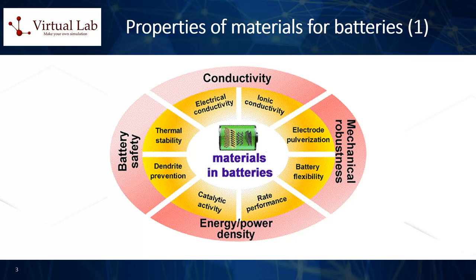Second, power density: power density is the rate at which energy can be extracted from a battery. Materials with a high power density allow for rapid charging and discharging. Third, electrochemical stability: the materials used in batteries need to be electrochemically stable, meaning they should not decompose or react unfavorably during charging or discharging. This ensures the longevity of the battery and its safe operation.